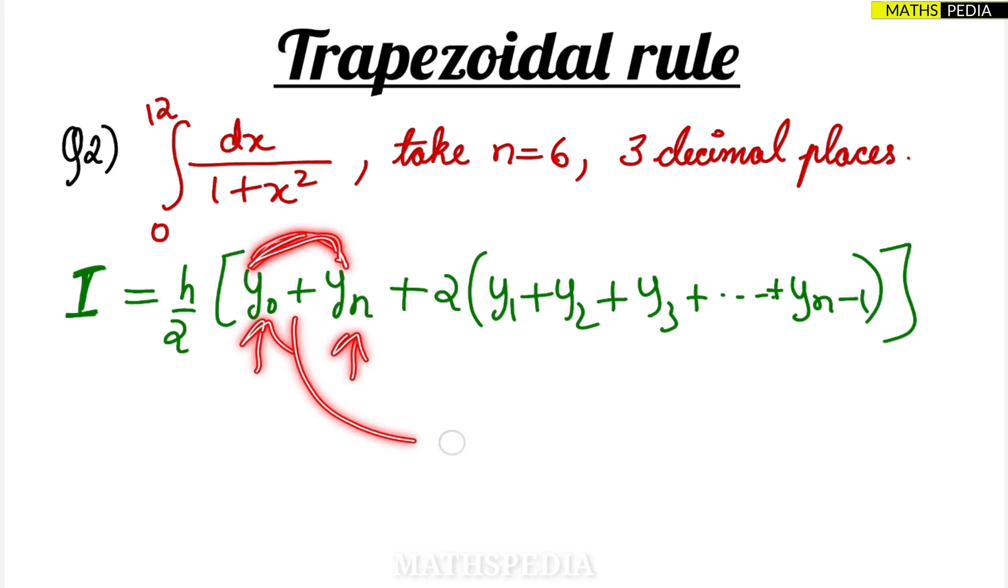So this simple formula - how to remember this? Simple: first term, last term, between these two terms how many terms are there, put it over here. First term, last term, between all the terms multiply with 2, add them up, then multiply with h by 2, that's it. Now what is h here? This is the important thing. h is nothing but b minus a by n.